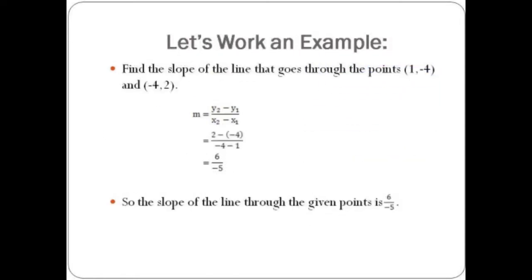Let's work an example. All we have to do is subtract y1 from y2 and divide by x2 minus x1. Plugging in the numbers from the given points, we get 2 minus negative 4 over negative 4 minus 1, which equals 6 over negative 5. So the slope of the line is negative 6 fifths.